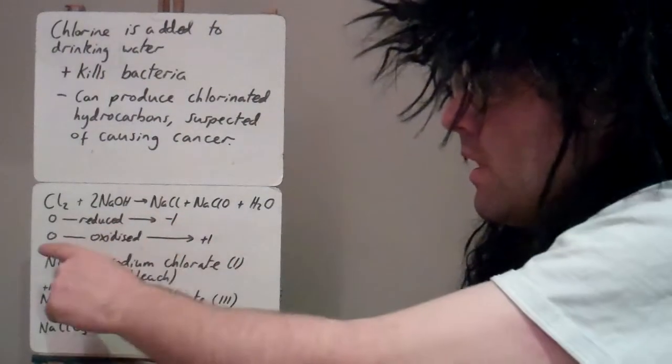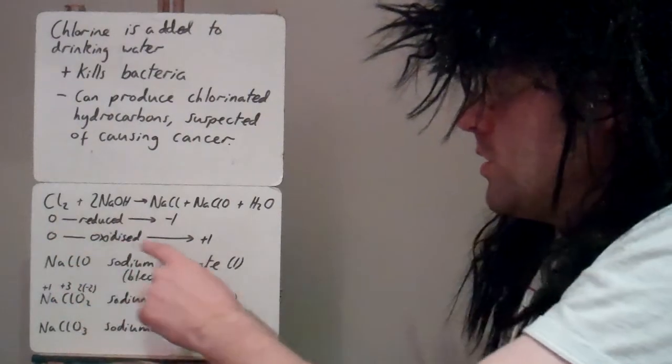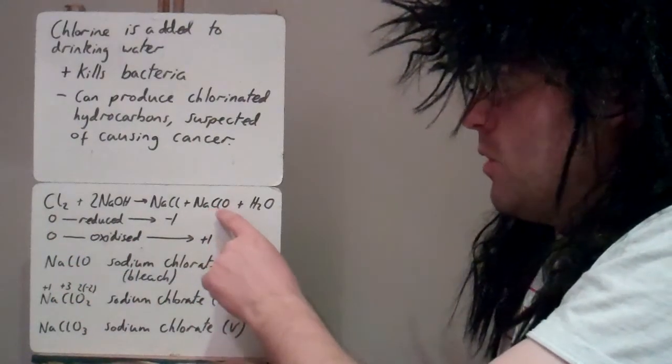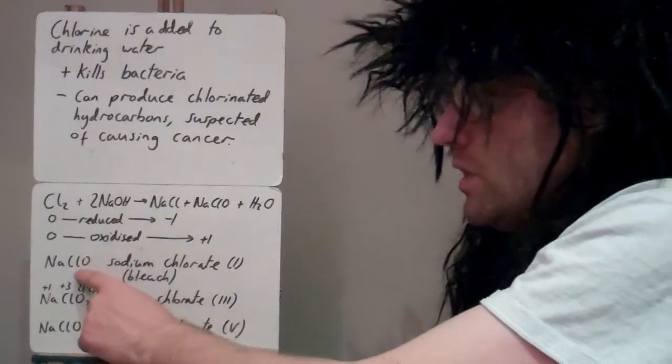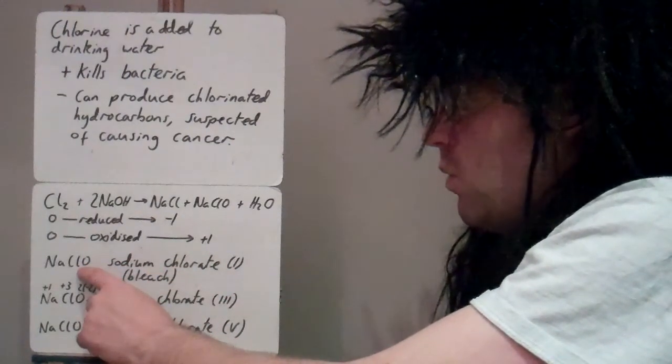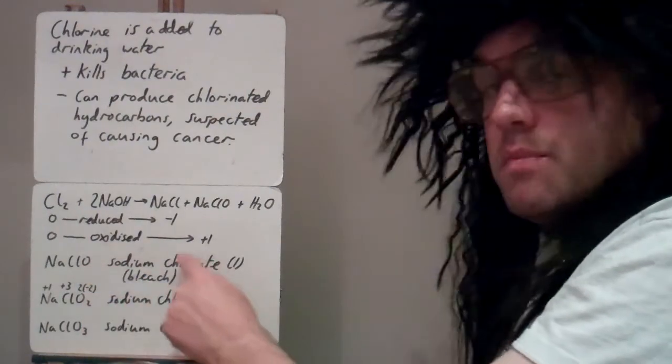The oxidation number here is zero, but then it's oxidised to plus one in sodium chlorate. This is sodium chlorate one because the oxidation number of the chlorine in sodium chlorate is plus one. This is what we know as bleach.